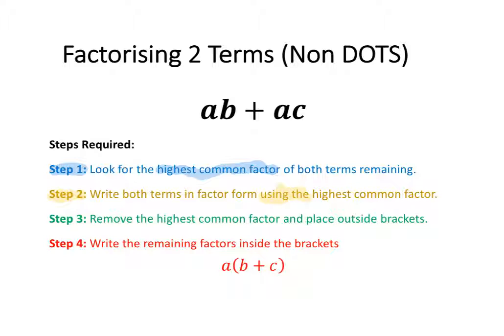Step three is to remove the highest common factor and replace it outside of the bracket. Step four is to write the remaining factors inside the bracket. So you end up with the highest common factor outside the bracket and the remaining factors inside the bracket.